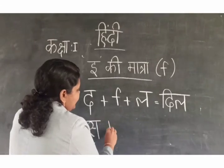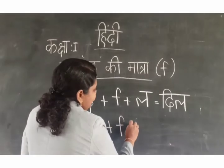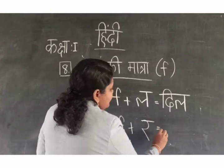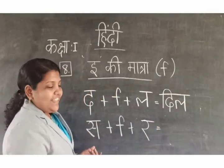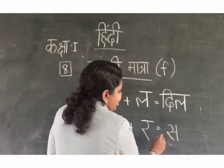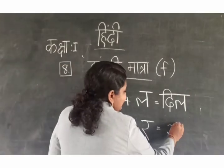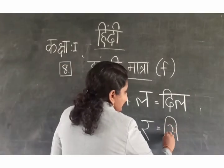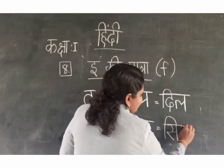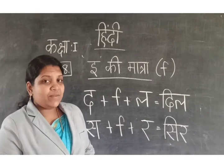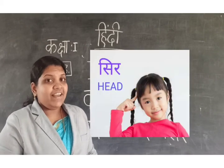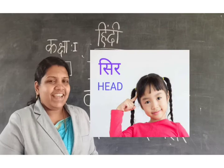Then the next word: Sa plus Ikki Matra plus Ra. How to join these letters? First the letter Sa, then Sa plus Ikki Matra gives Si, then Ra. So the word is: Sir. And do you know what is the meaning of Sir? Sir means head. Very good.